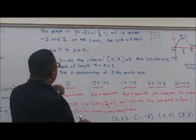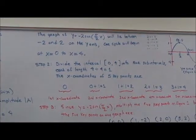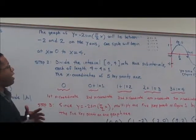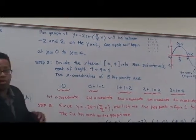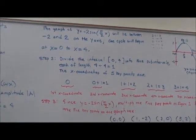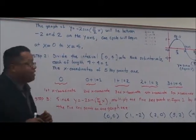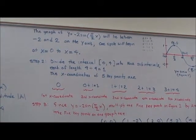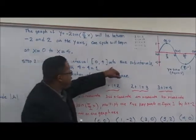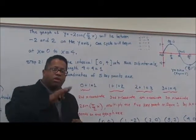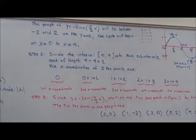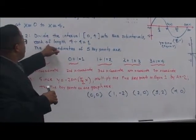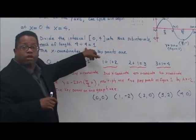When we graph y equals negative 2 sine of pi over 2 times x, it will lie between negative 2 and 2 on the y-axis. One cycle will begin at x equals 0 and end at x equals 4. Step 2: we divide the interval 0 to 4 into four sub-intervals, each of length 4 divided by 4, which equals 1.